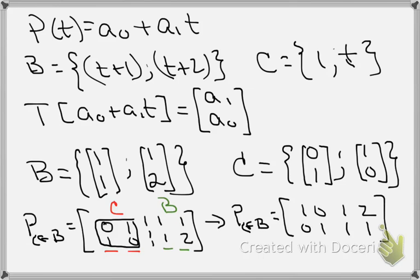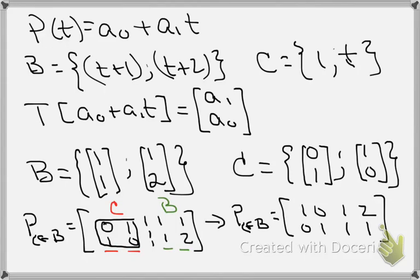And of course, we see directly that our solution then would be P that takes us from B to C. Take a peek at that, that's going to be 1, 2, and 1, 1. So here's our transition matrix.